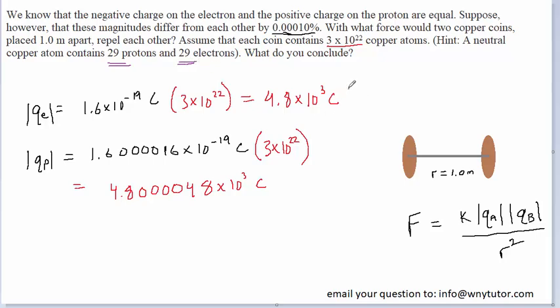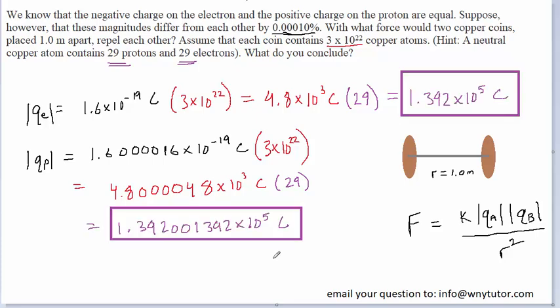But we're still not done because each atom contains 29 protons and 29 electrons. So we have to take the amount of charge supplied by the electrons and multiply it by 29 since each atom contains 29 of them, and then we have to take the amount of charge supplied by the protons and multiply that by 29, again, since each atom contains 29 protons. Now in the purple boxes, we have the total magnitude of charge supplied by the electrons and then the total magnitude of charge supplied by the protons.